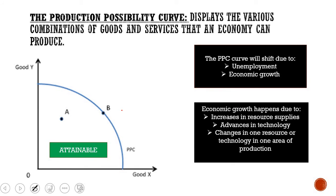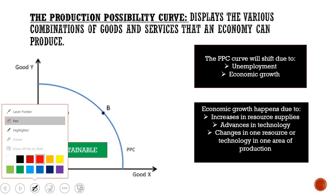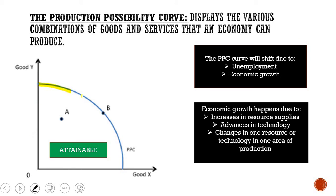Then we look at the production possibility curve. This displays the various combinations of goods and services that an economy can produce. This line shows all the resources in our economy and the various combinations of good X and good Y that we can produce using all of our resources. Everything inside is attainable — you have enough resources to produce that amount of good X and good Y. Everything outside is unattainable — you do not have enough resources.